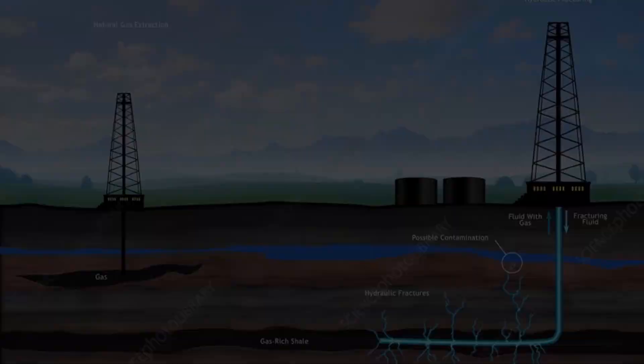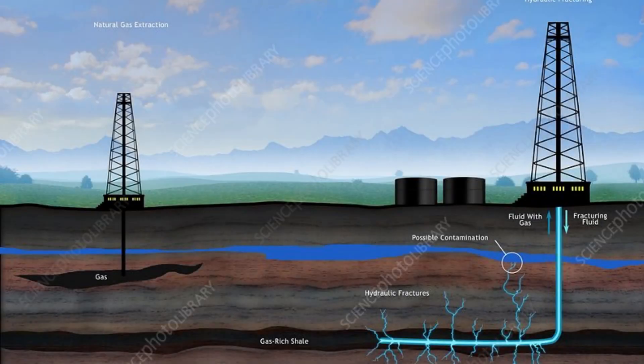If the results from a test well show that a geologic formation has enough natural gas to produce and make a profit, one or more production or development wells are drilled. Natural gas wells can be drilled vertically and horizontally into natural gas-bearing formations. In conventional natural gas deposits, the natural gas generally flows easily up through wells to the surface.